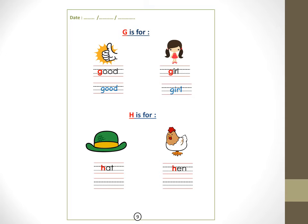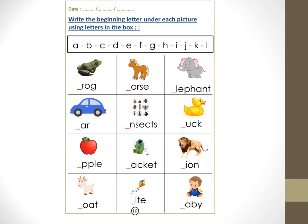Hat, by the white hat. H, H — hen, hen. And the word 'hen.' Okay, next page — now write the beginning letter under each picture using the letters in the box.